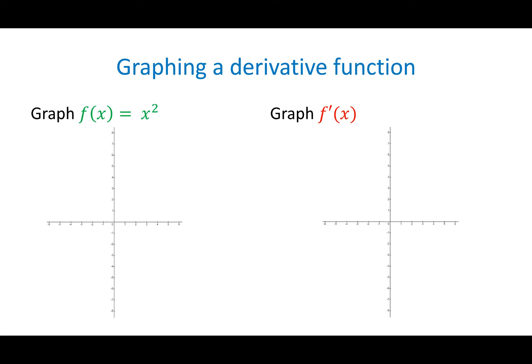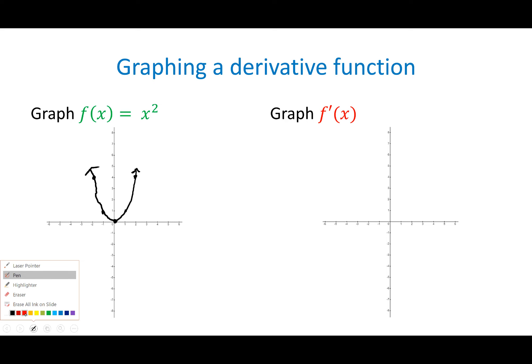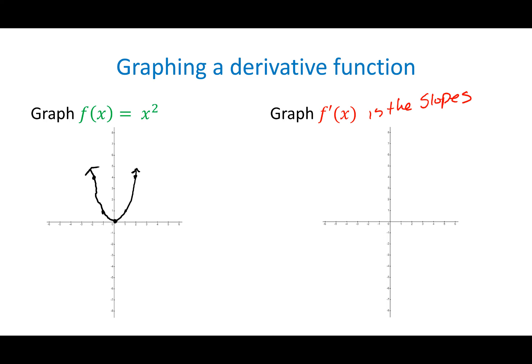So if I were to graph X squared, I know I'd have points like 1,1 and 2,4 and 0,0 and negative 1,1 and negative 2,4. So it's going to be a parabola. If I'm asked to graph the derivative function, all I'm graphing is the slopes. There are infinitely many slopes happening on that X squared, and I can represent them as the values for my graph of F prime of X.